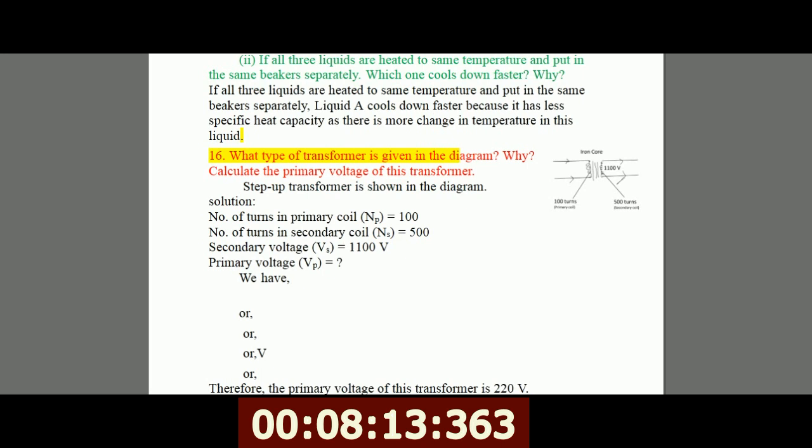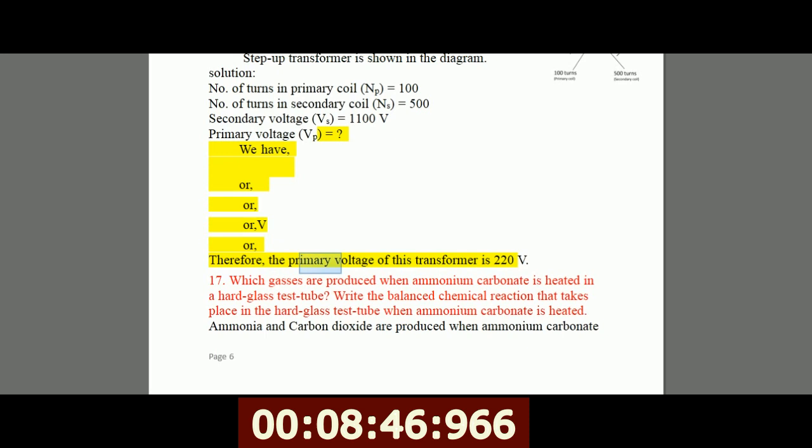16. What type of transformer is given in the diagram? Why? Calculate the primary voltage of this transformer. Step up transformer is shown in the diagram. Solution: Number of turns in primary coil, NP equals 100. Number of turns in secondary coil, NS equals 500. Secondary voltage, VS equals 1100V. Primary voltage, VP equals? We have, VP/VS equals NP/NS, or VP equals VS times NP divided by NS, or VP equals 1100V times 100 divided by 500, or VP equals 220V. Therefore, the primary voltage of this transformer is 220V.